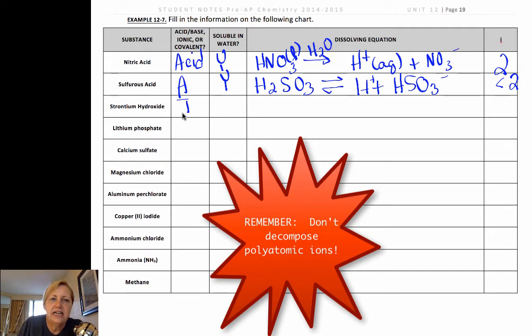Strontium hydroxide is ionic. It is a strong base, so yes it is soluble. Strontium hydroxide, group two, so it has two hydroxides with it. Since it's a strong base, it goes 100% to strontium ion plus two hydroxide ions. That gives us one strontium plus two hydroxides for a total of three ions that form.